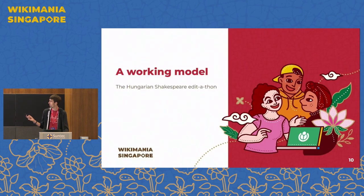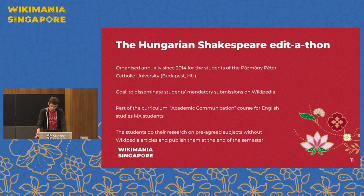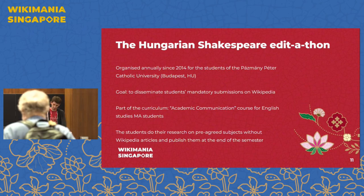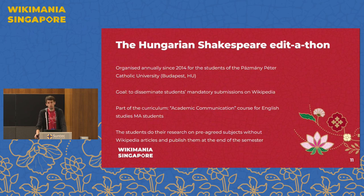Now I will present the Hungarian Shakespeare editaton. It has been organized annually since 2014 at the Pázmány Péter Catholic University. The participants are first-year master's students in English studies. The goal is not just achieving the previously discussed skills by handing out a mandatory seminar paper, but also to motivate them by publishing those seminar papers as Wikipedia articles.